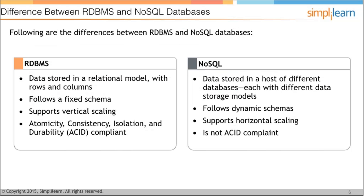Here you can see a direct comparison between how a RDBMS and a NoSQL database differ. In RDBMS, data is stored in a relational model with rows and columns, whereas in NoSQL it is stored in a host of different databases each with different data storage models.